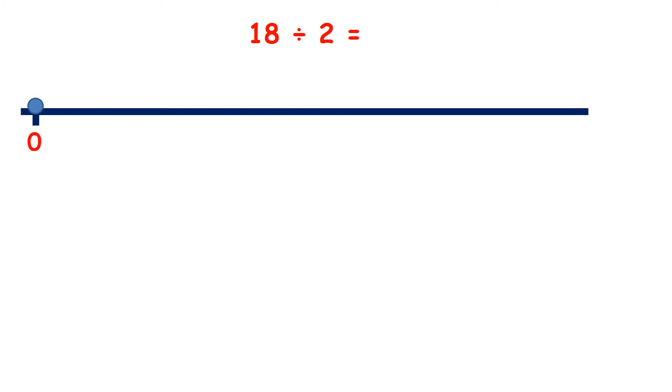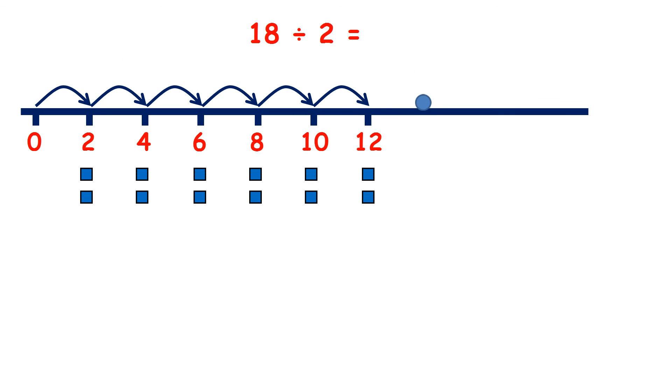So let's count. 2, 4, 6, 8, 10, 12, 14, 16, 18. So that's 1, 2, 3, 4, 5, 6, 7, 8, 9 jumps.